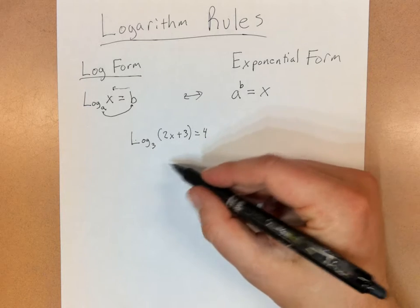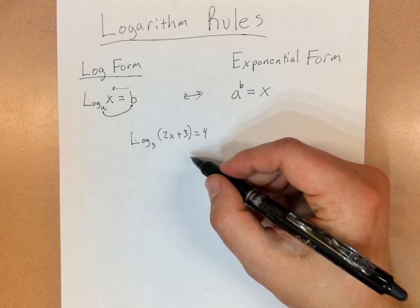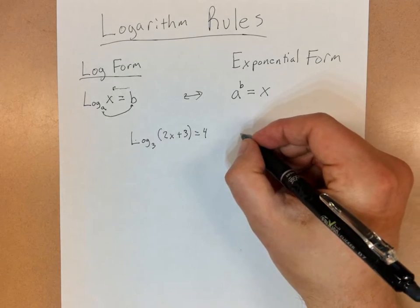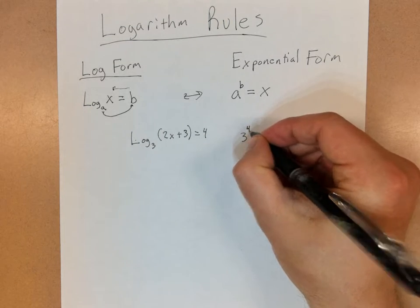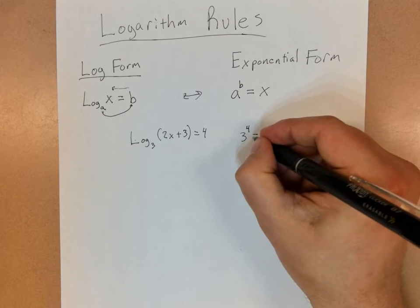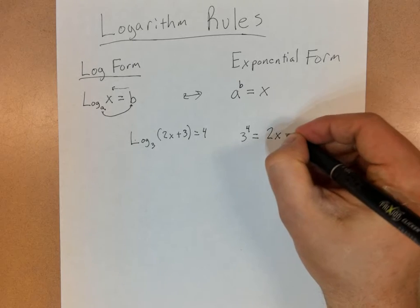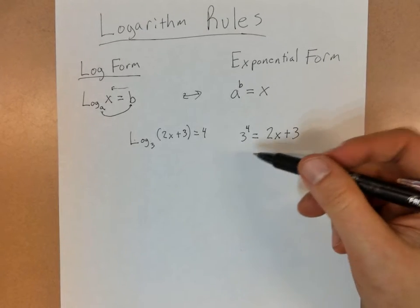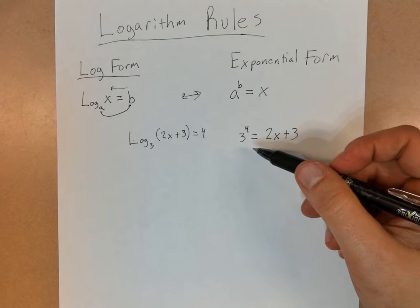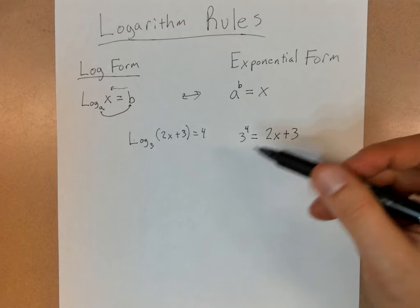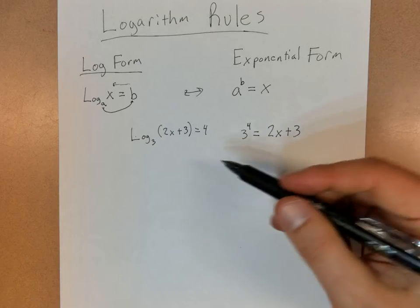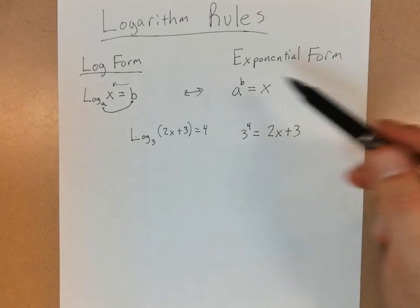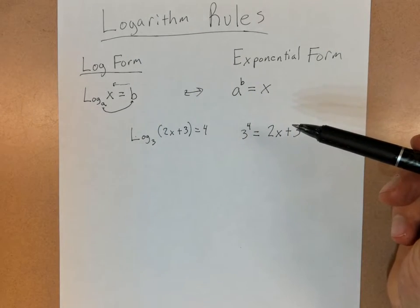You can rewrite this as 3 to the 4th power equals 2x plus 3, because that's the thing you're taking the log of. And now this becomes much easier to solve as an equation. I won't go through and solve it, but that's how you can use the converting from log form to exponential form to assist you.